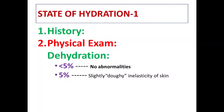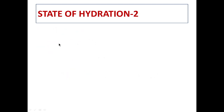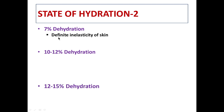In physical examination, we normally estimate the percentage of dehydration — this is just an estimate, not a precise measurement. If there is less than 5% dehydration, we don't see any abnormalities in the animal. At 5% dehydration, there will be slight inelasticity of the skin.